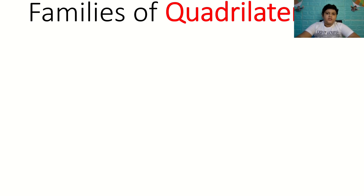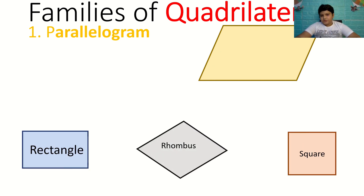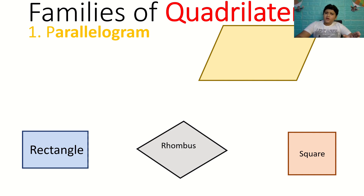So let's look at the first family, which is the parallelogram. There are three members in the family of parallelogram. Number one is rectangle. Number two is rhombus. And number three is a square. If you look at the rhombus, it is similar to the diamond.